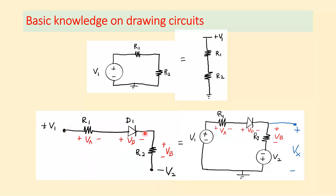In the full layout, R1, D1, and R2 remain the same. At node V1, replace with a voltage source to ground. At node negative V2, since it is negative, the terminal connected to R2 is the negative terminal going to ground. Alternatively, draw it with positive at the top and negative at the bottom, but write the value as negative V2.